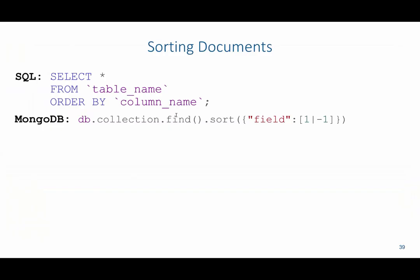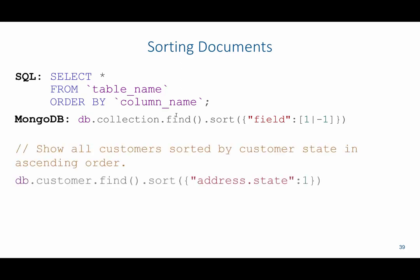To sort documents in SQL we would use the ORDER BY clause to sort by a specific column name. In MongoDB we add .sort to the end of our find, then specify the field we're interested in sorting inside curly brackets, using 1 for ascending and -1 for descending. For example, to show all customers sorted by state in ascending order we'd say db.customer.find().sort with address.state set to 1.